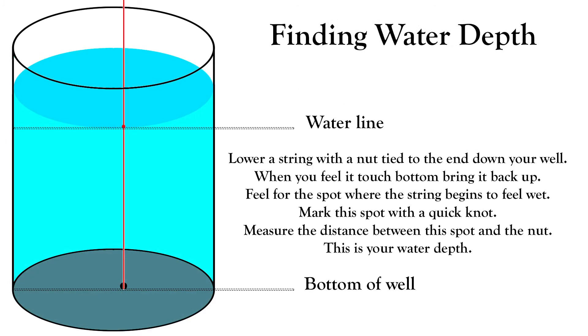Now if you still need to get your water depth, it's pretty simple. Just tie a nut to a string and lower it into your well until it touches the bottom and pull it back up, marking the spot where the string begins to get wet. Measure the distance between the nut and the mark and this is the depth of water you have.